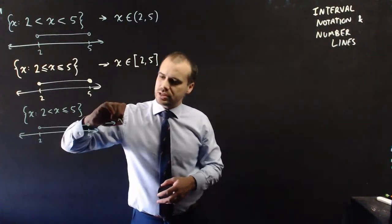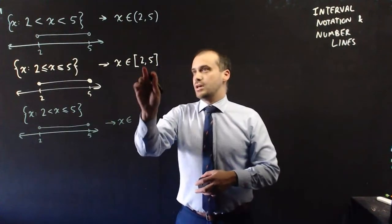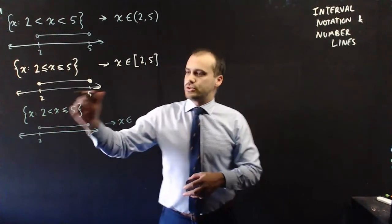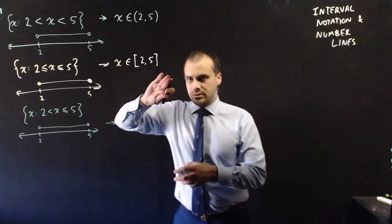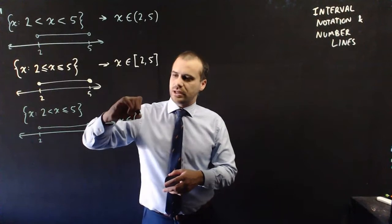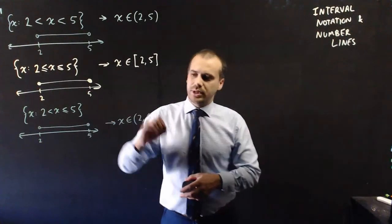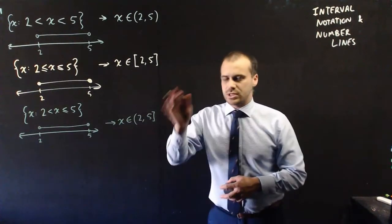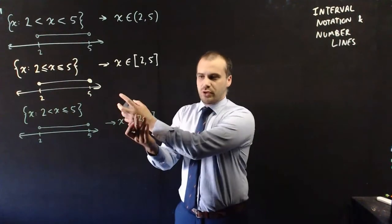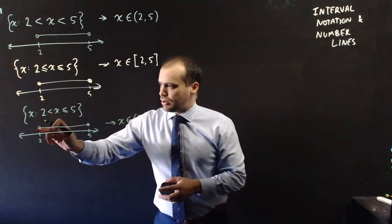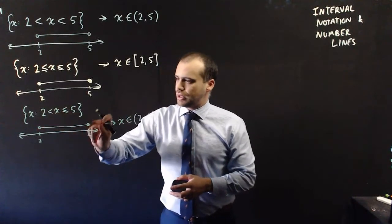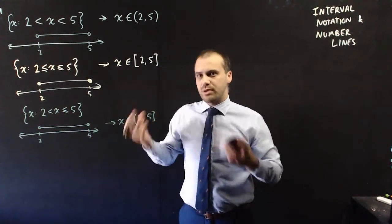Now for our interval notation, that's going to mean that x is in the set. Now, we don't want to include 2, so we're using a curved bracket there. But we do want to include 5, so we use a square bracket there. Now obviously this works in vice versa. If that was a solid circle and that was an open circle, we'd swap those brackets around.